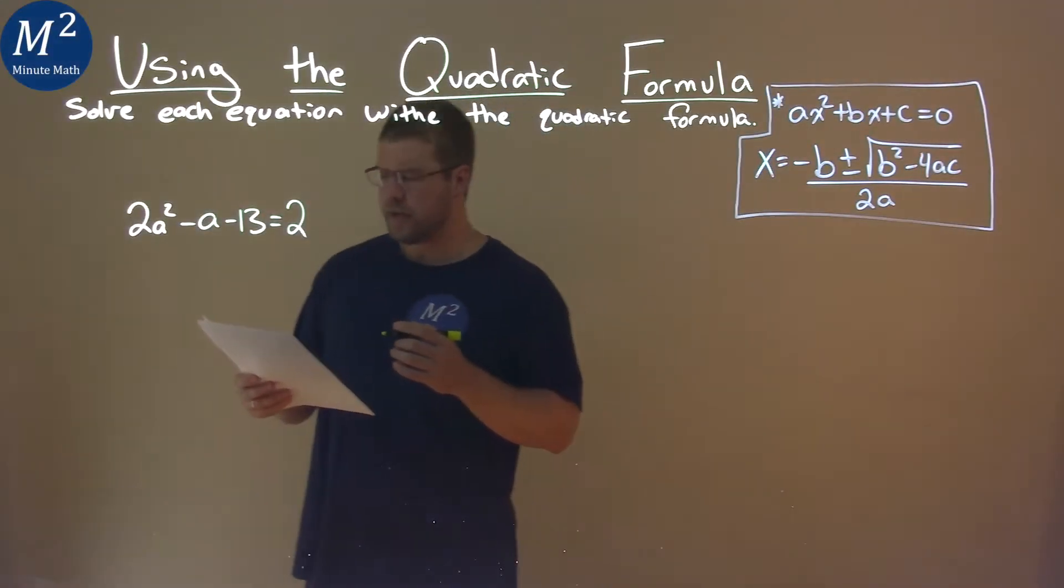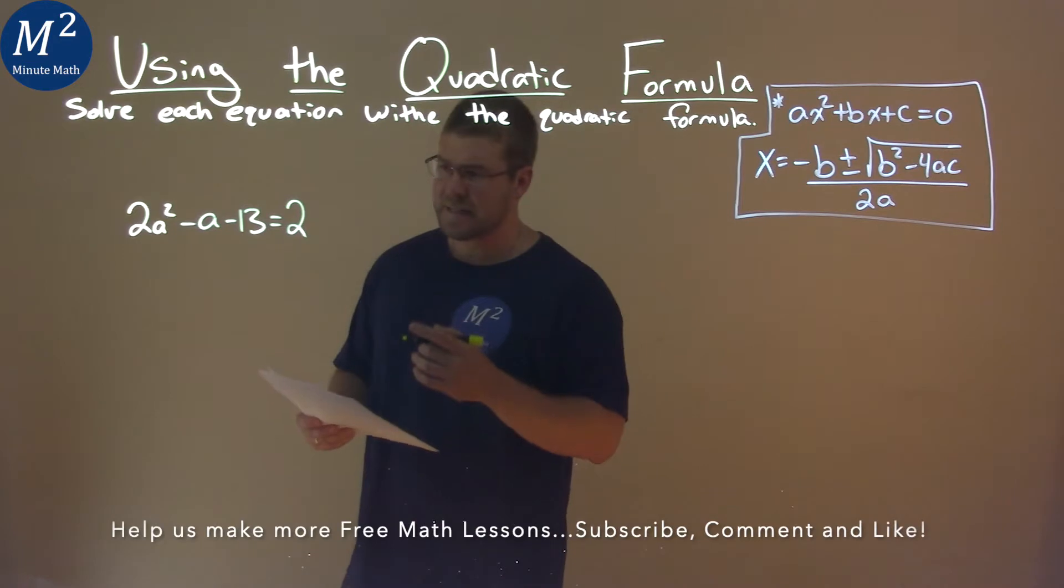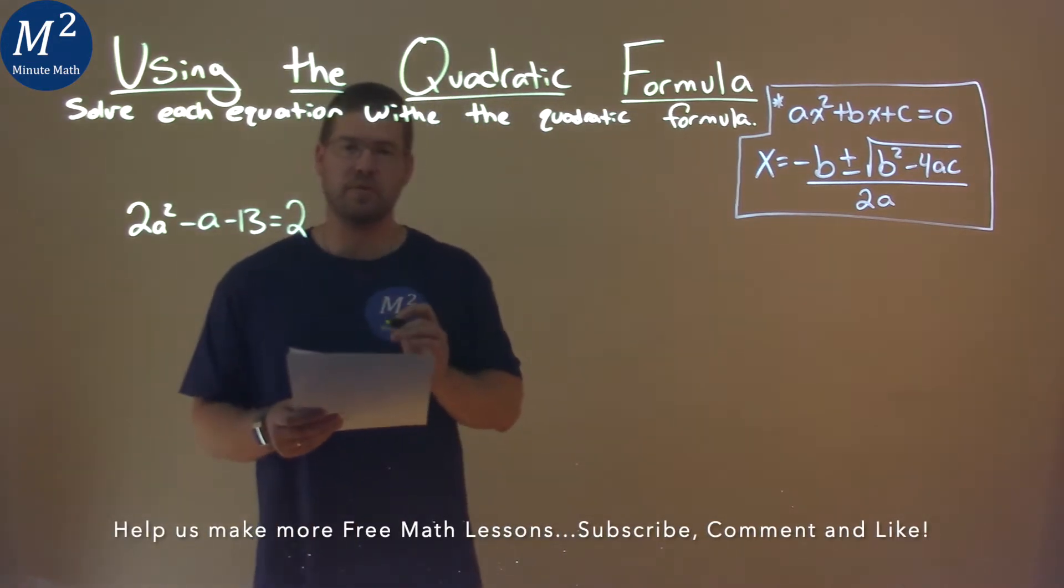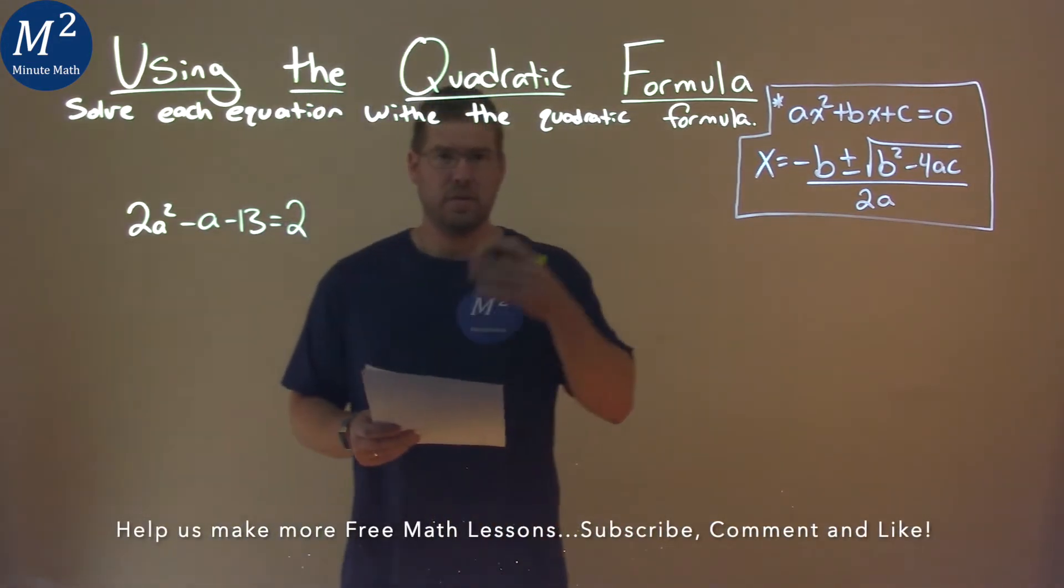We're given this problem right here: 2a squared minus a minus 13 equals 2, and we need to solve this using the quadratic formula.